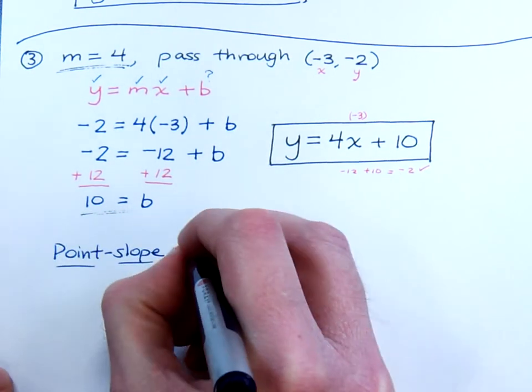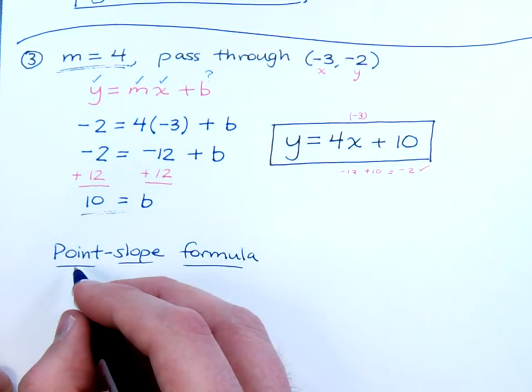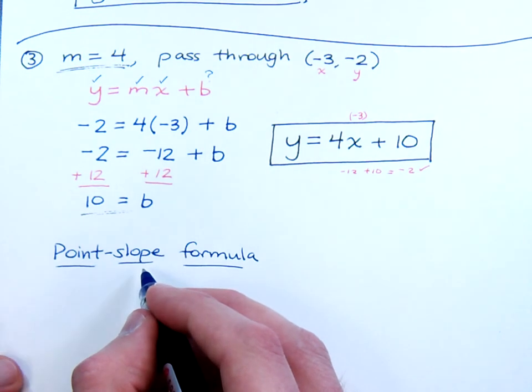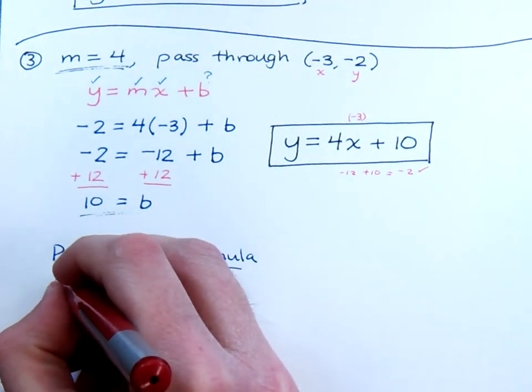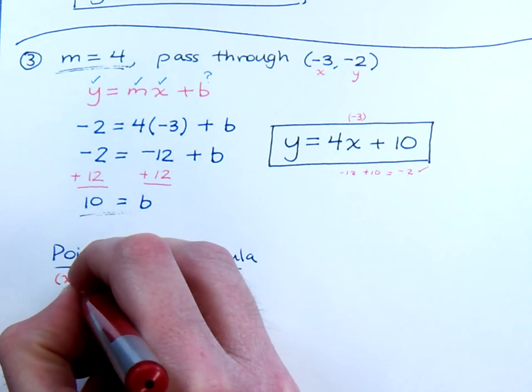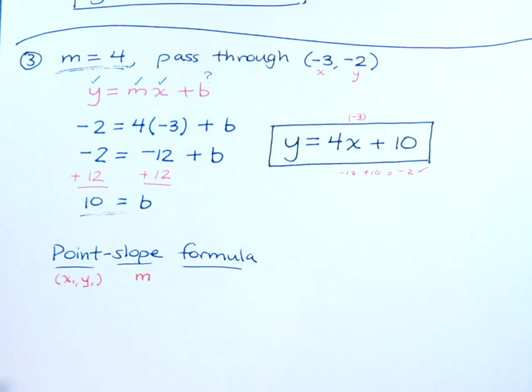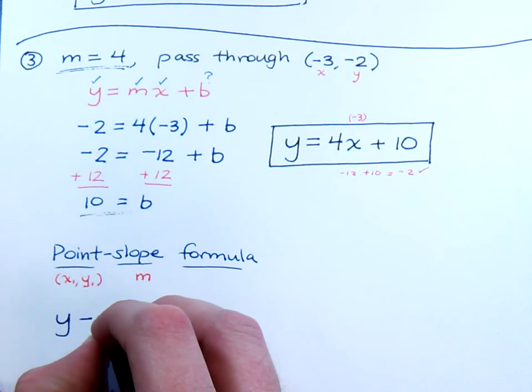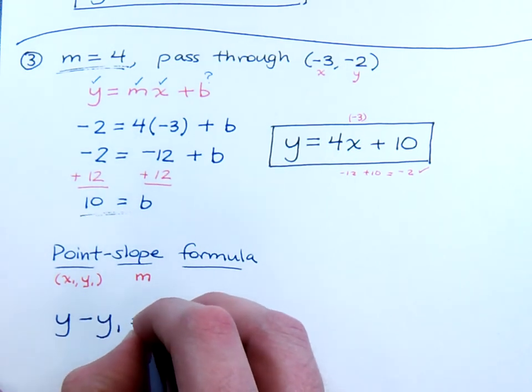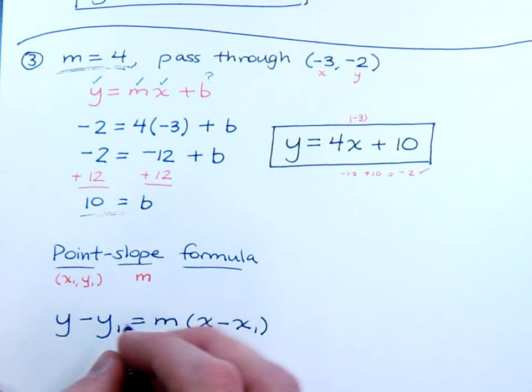The point-slope formula is a formula that uses a point on the line and the slope of the line to get you the equation of the line. So, the point is typically given, or you see it used in the formulas, x1, y1, and of course your slope is going to be represented by m. Here is the point-slope formula. It says that y minus y1 is equal to your slope m times x minus x1.